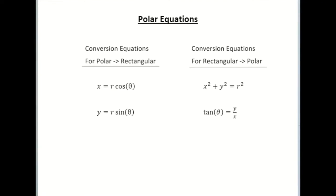So to start this off, let's review the conversion equations that we used for converting polar coordinates to rectangular and vice versa. If we're trying to go from polar form to rectangular form, we're going to use these two equations for x and y: x equals r cosine theta, and y equals r sine theta. When going from rectangular to polar form, we take advantage of the Pythagorean theorem, which relates x, y, and r — so r squared equals x squared plus y squared — and the definition for tangent. So we've got basically three trig functions and the Pythagorean theorem all helping us convert between rectangular and polar form.